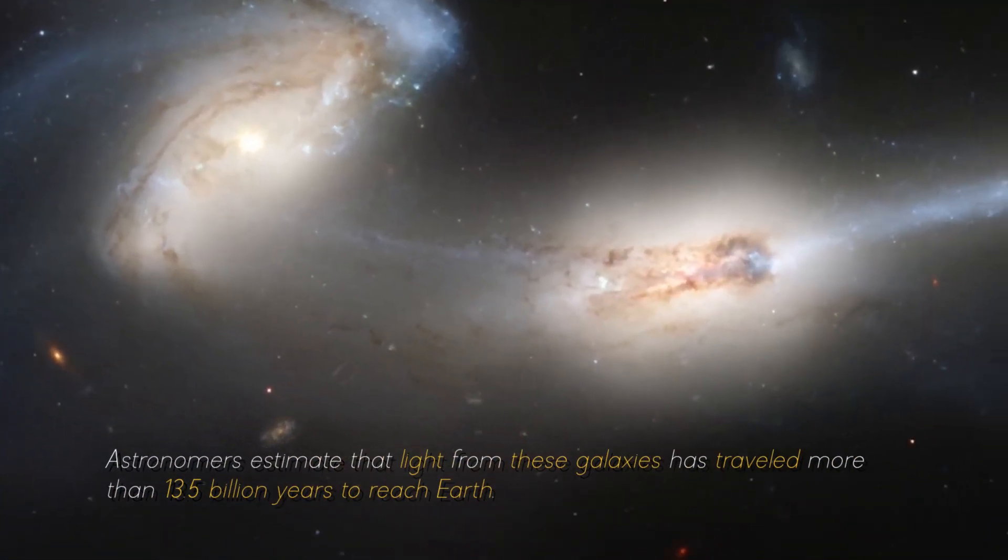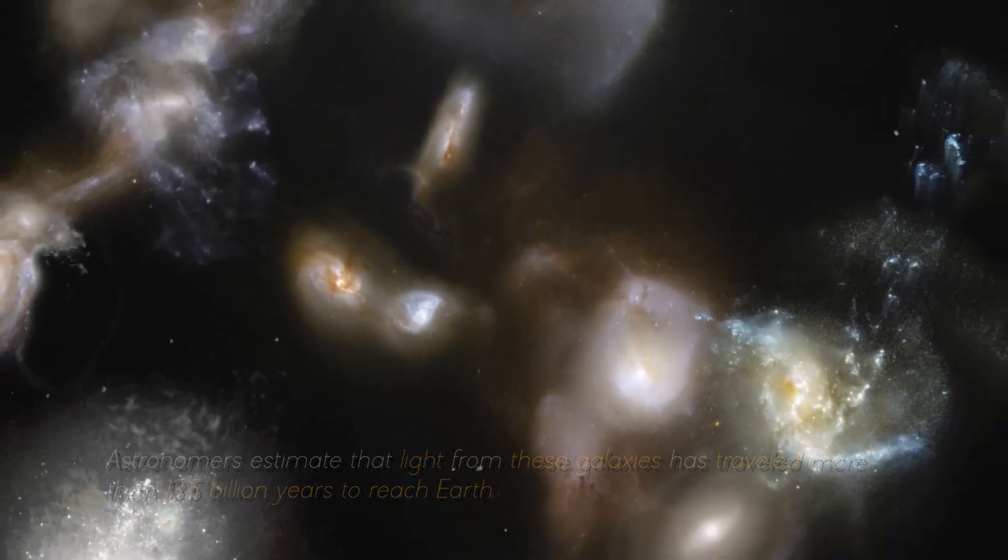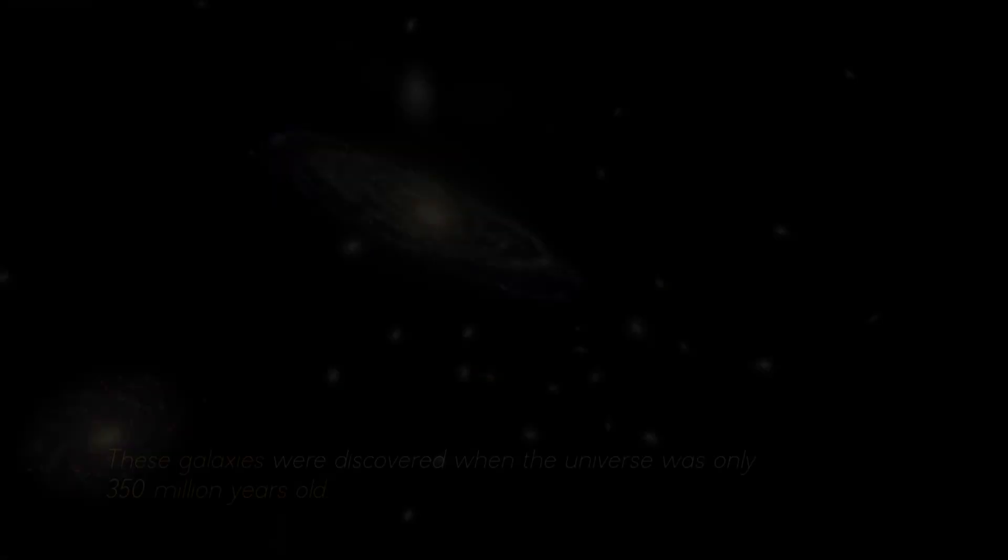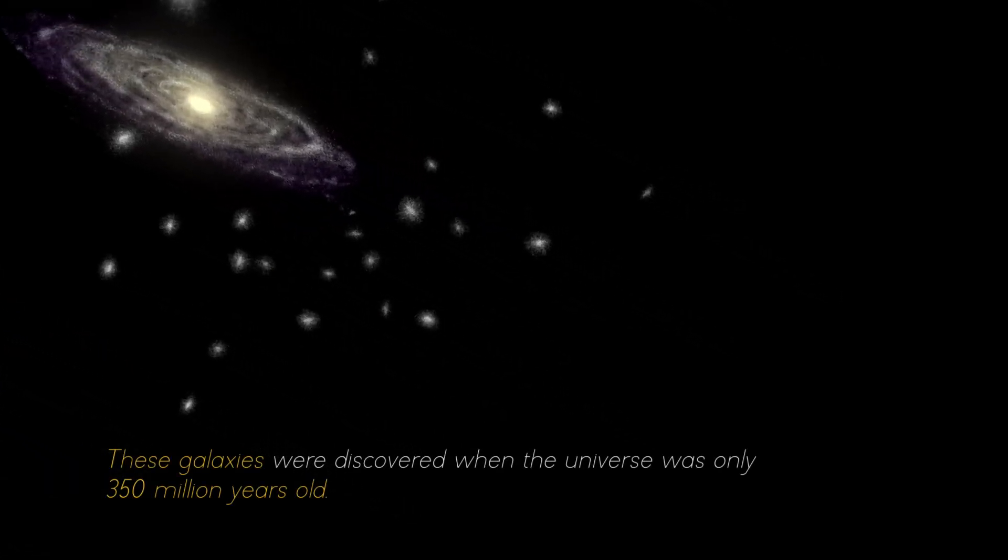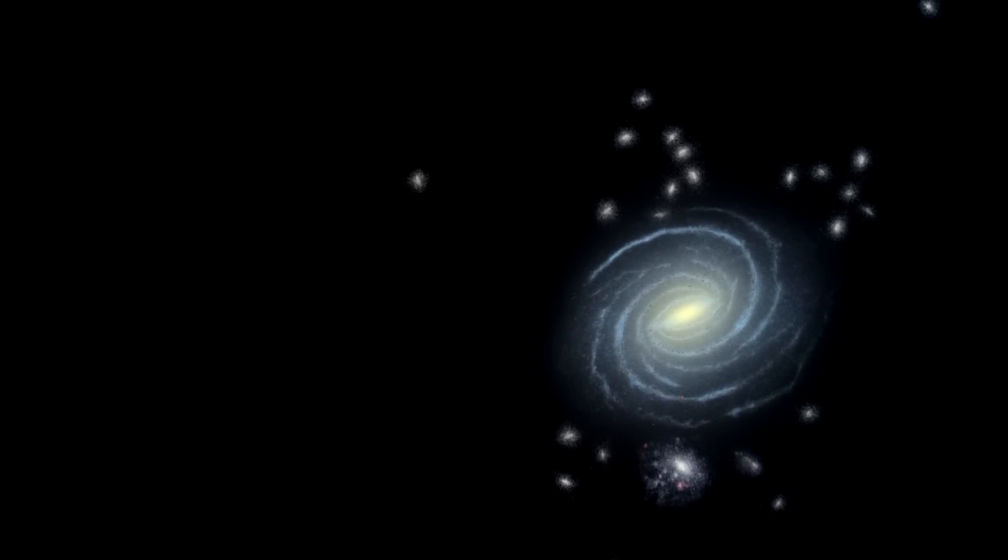Astronomers estimate that light from these galaxies has traveled more than 13.5 billion years to reach Earth, giving us a glimpse into the distant past of the universe. These galaxies were discovered when the universe was only 350 million years old, shedding light on how quickly the first generations of galaxies emerged.